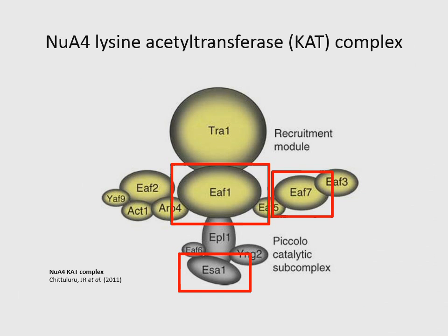NeoA4 is also an interesting KAT in yeast. It's highly conserved and composed of 13 different subunits. Its catalytic domain is actually essential for growth and is called ESA1. Another important protein of this complex is EAF1, which is a structural component. However, unlike ESA1, EAF1 deletion mutants can survive.